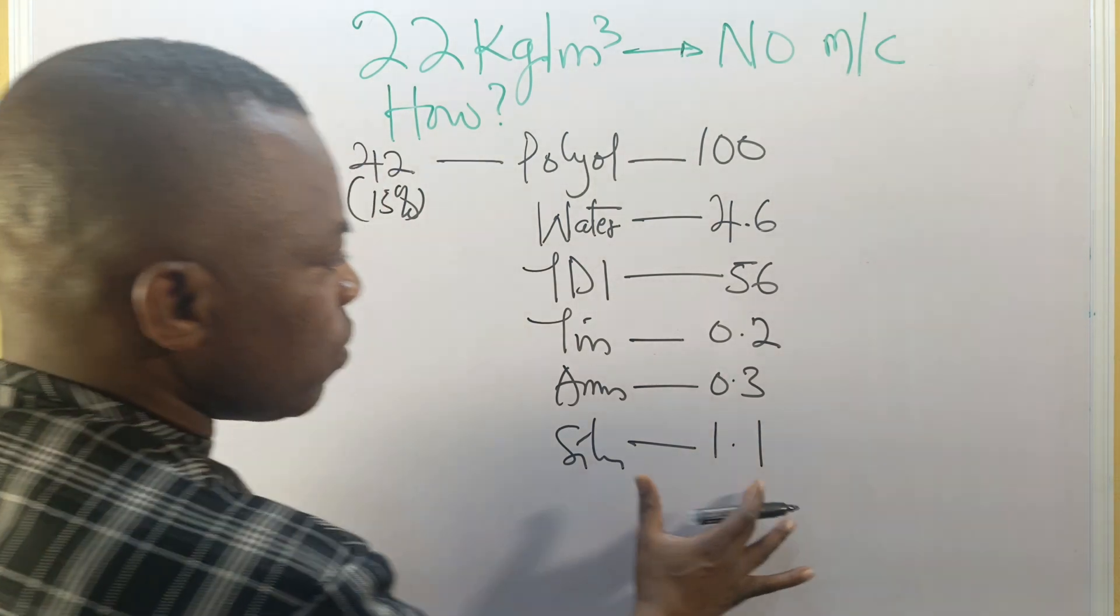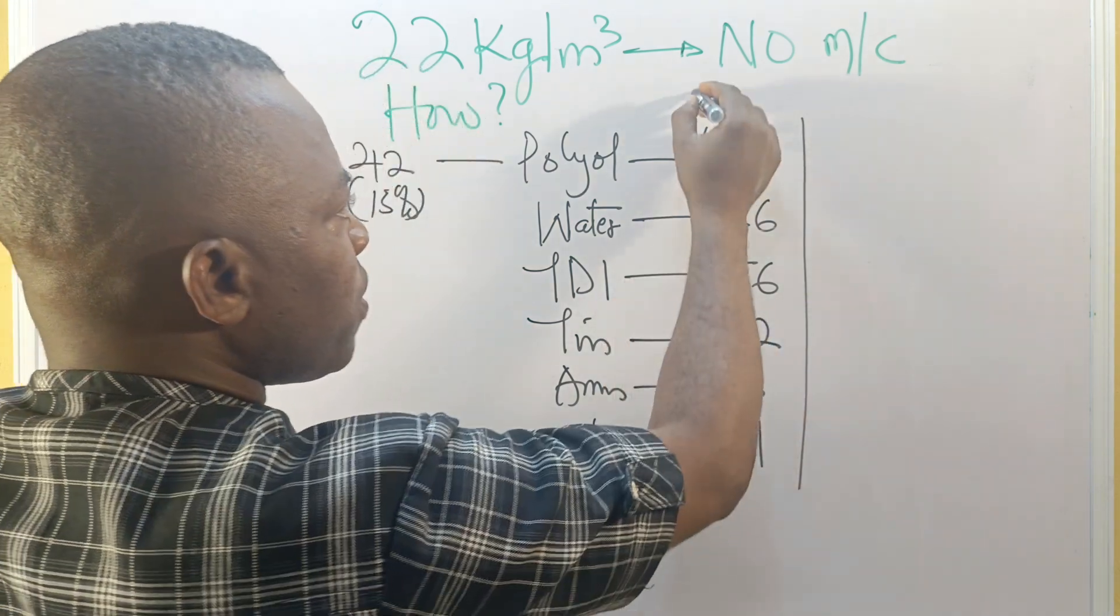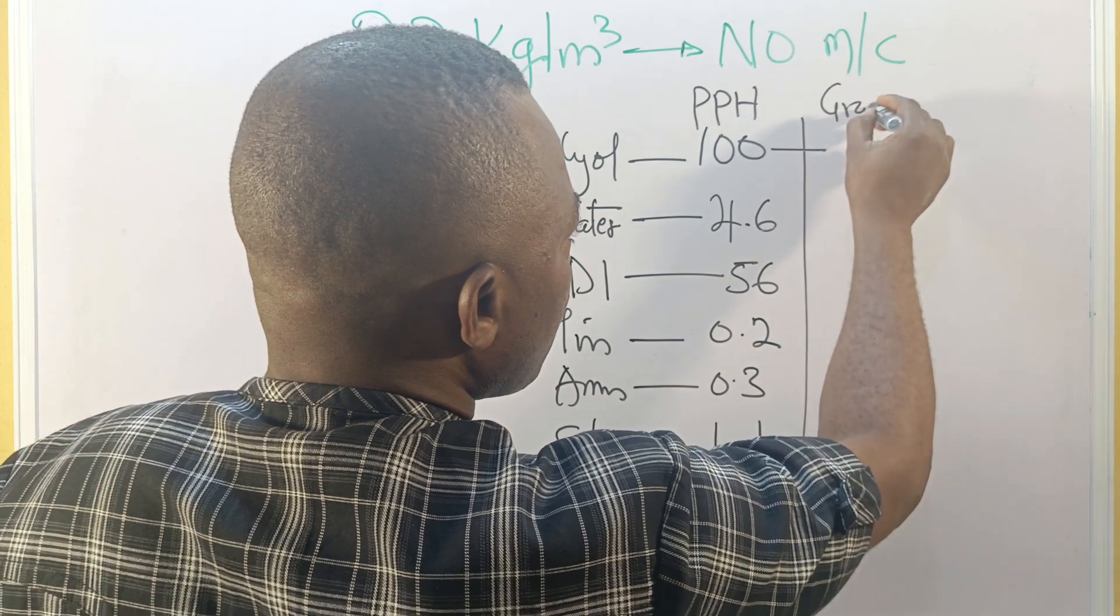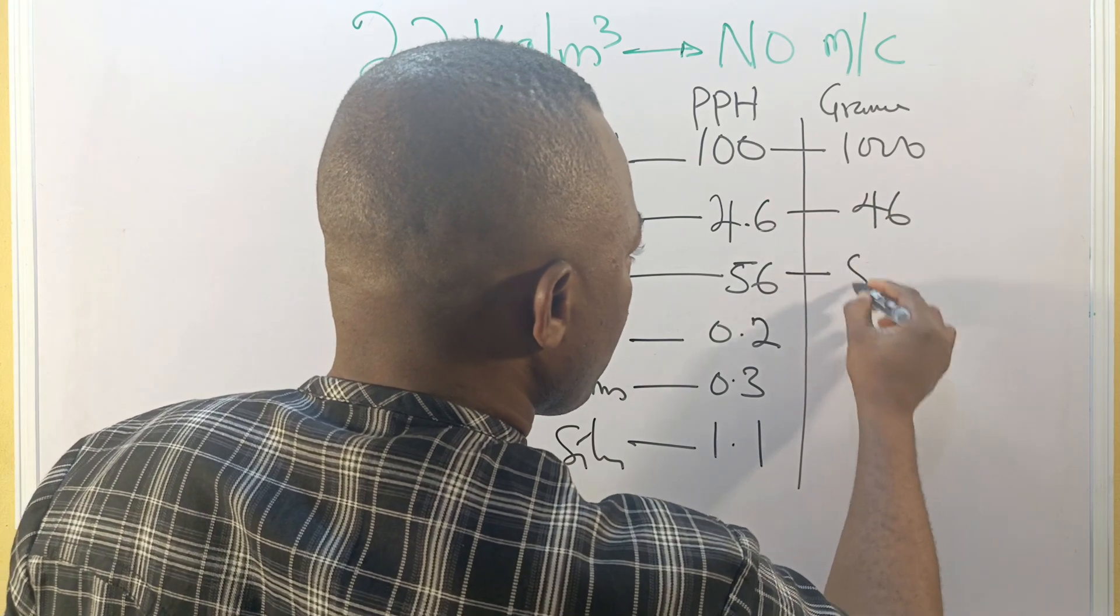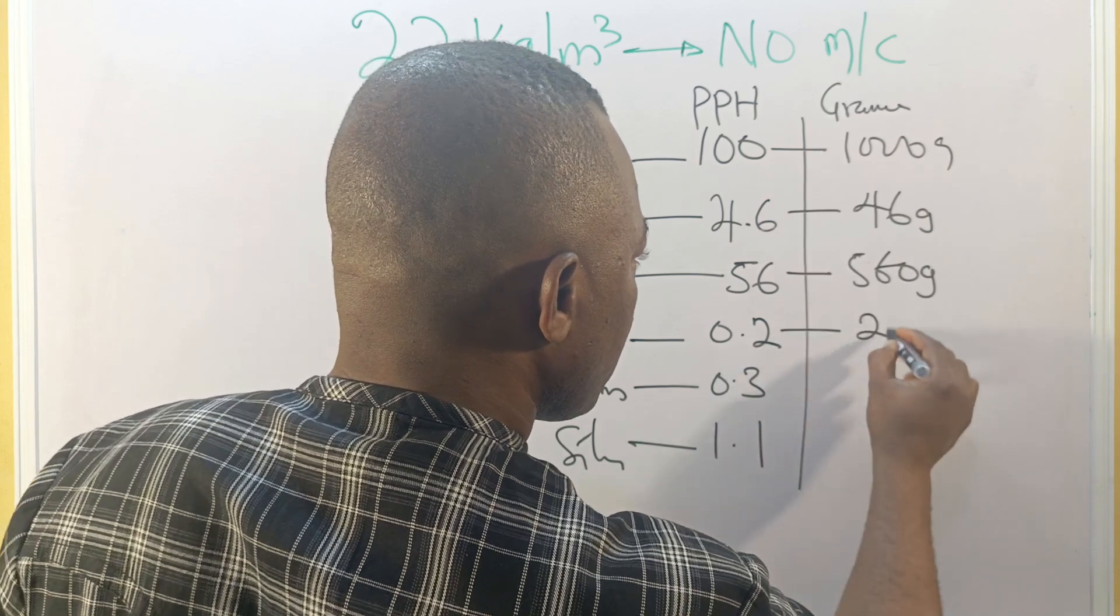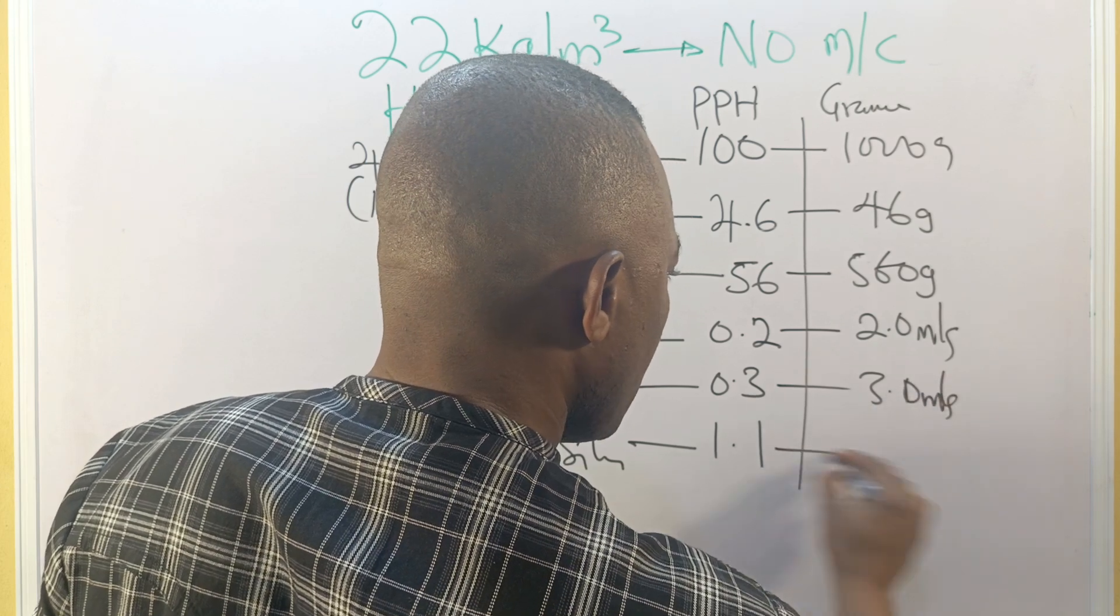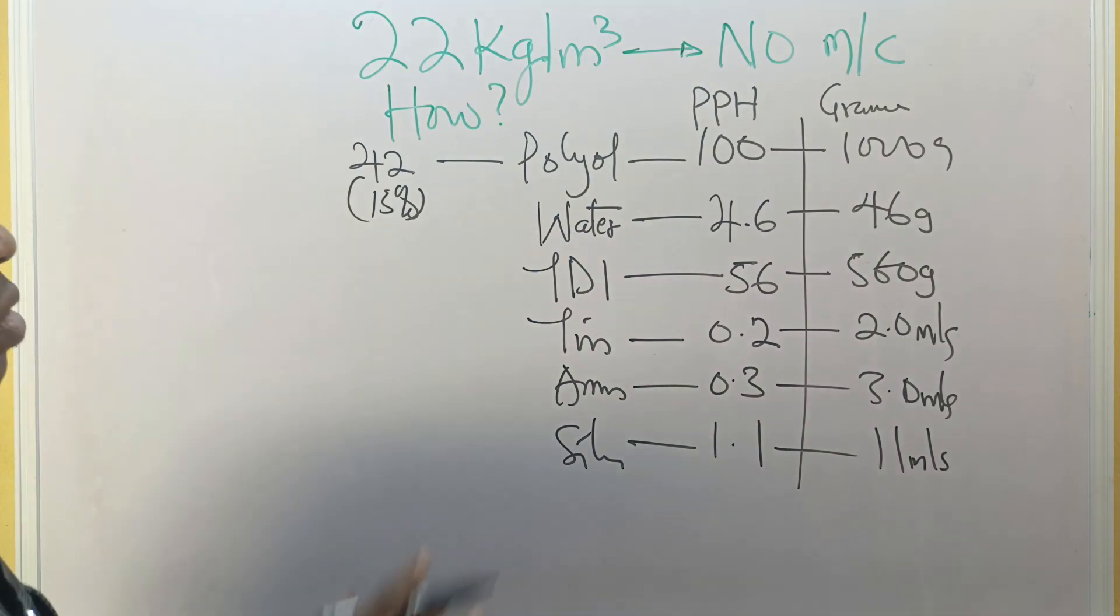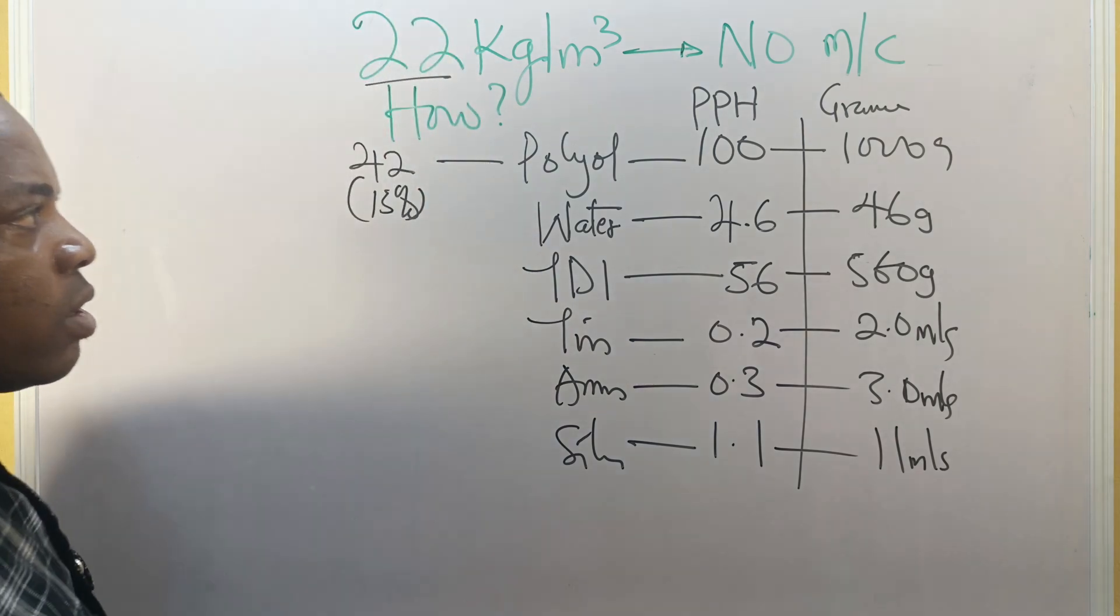So this is how PU foam formulation without MC is being set up or designed. Now, if I want to carry out laboratory analysis of this foam, you take this. This is part PPH. You take this value to your grams. This will give you 1000. This will give you 46. This will give you 56.70 grams. Already the unit is here. This is 2 mL. This is 3 mL. This is 3 mL. And this is 11 mL.